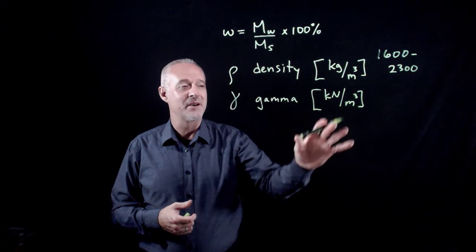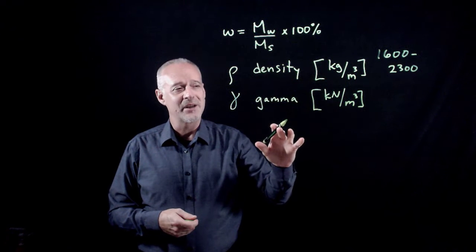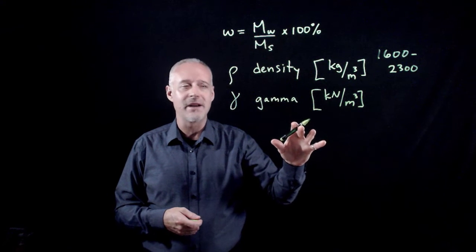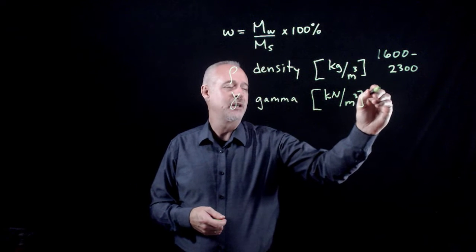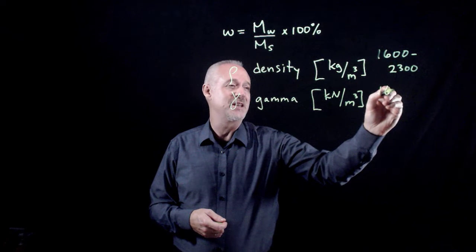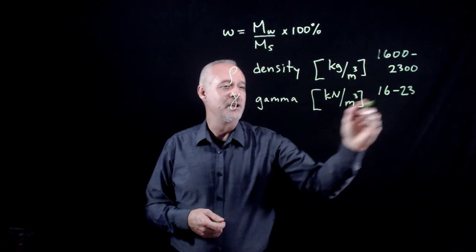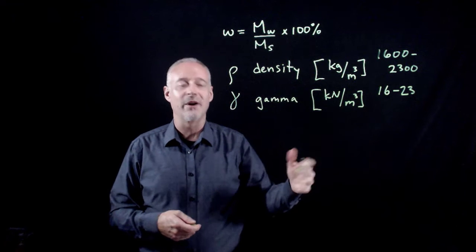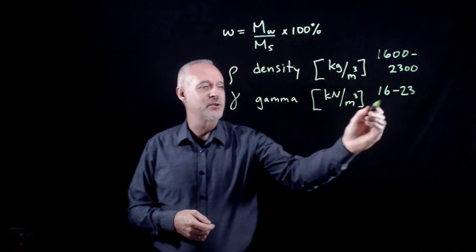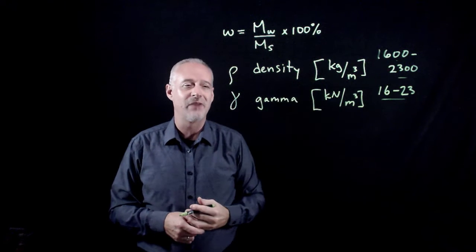Similarly, if you calculate numbers outside a range of about 16 to 23 kilonewtons per cubic meter, you've probably made a mistake. These are the target ranges for these values.